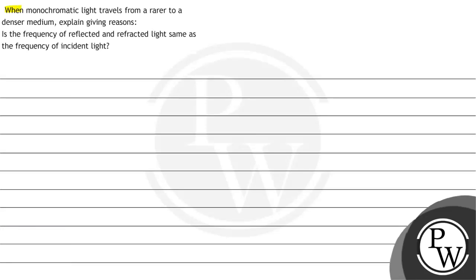The question says when monochromatic light travels from a rarer to a denser medium, explain giving reasons is the frequency of refracted and reflected light same as the frequency of incident light.